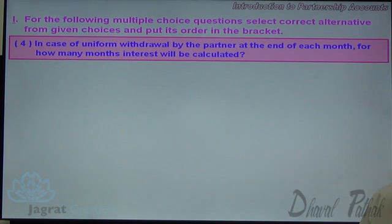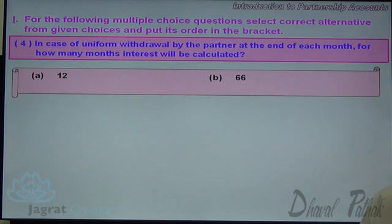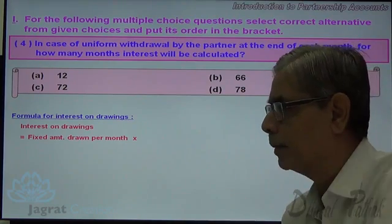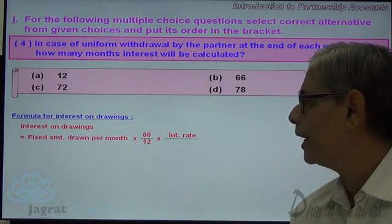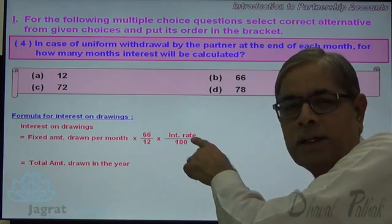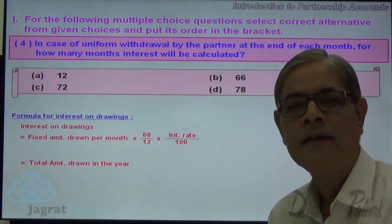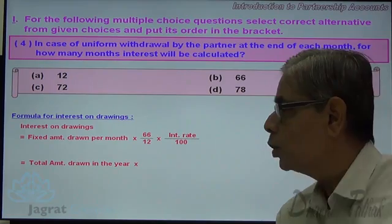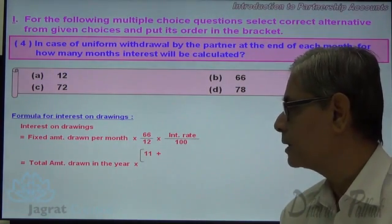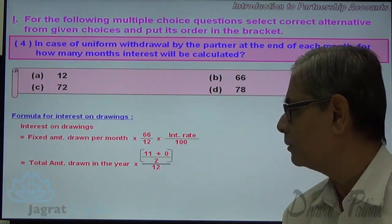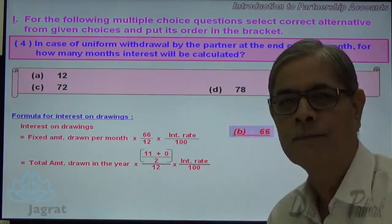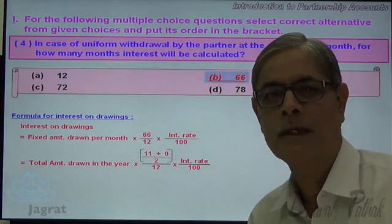Next. In case of uniform withdrawals by a partner at the end of each month, for how many months will interest be calculated? The options are 12, 66, 72, and 78. The formula is: fixed amount drawn per month multiplied by 66, divided by 12, into the rate of interest divided by 100. For Gujarat board, the answer is 66.